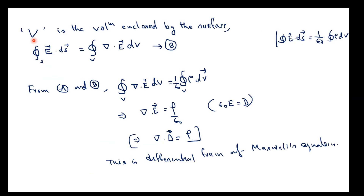Here V is the volume enclosed by the surface. According to the Gauss divergence theorem, we can convert the surface integral to a volume integral: ∮E·ds = ∫(∇·E) dV, where ∇· represents divergence. Let's call this equation (b).